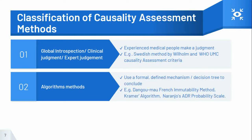Algorithm methods consist of a problem-specific flowchart with step-by-step instructions on how to reach an answer. They provide a structured and standardized method of assessment in a systematic way. These are a set of questionnaires whose answers provide the causality. For example, the French imputability method, Kramer algorithm, and Naranjo's algorithm.